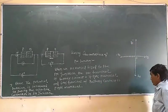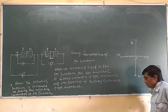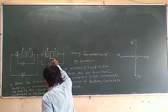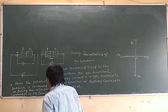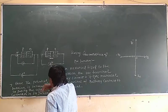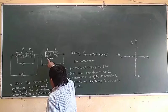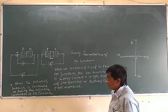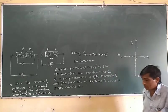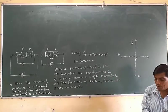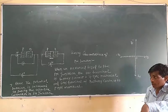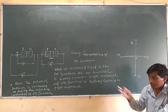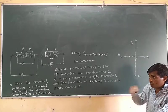When we apply reverse voltage to this junction, we decide what happens at this junction. The junction resistance will be increased — as we studied in the previous class, the junction resistance will be high. Practically, there is no current passing through the junction.